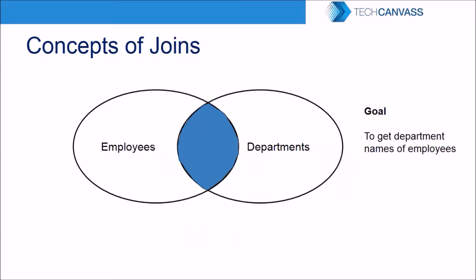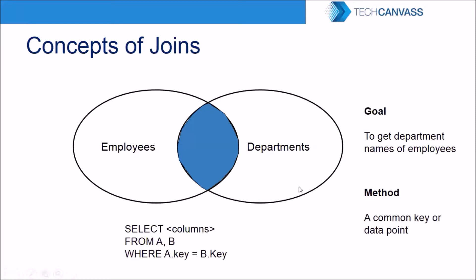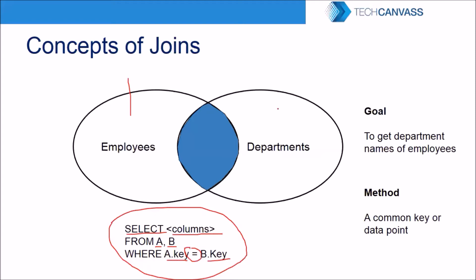When we want data that is common between two tables, we use an inner join. To do that we write a SELECT query listing the column names we want — which can come from either table — followed by the FROM clause naming both tables, and then a WHERE condition equating the common key: key in table one equals key in table two, which in this case is the employee ID from both tables.